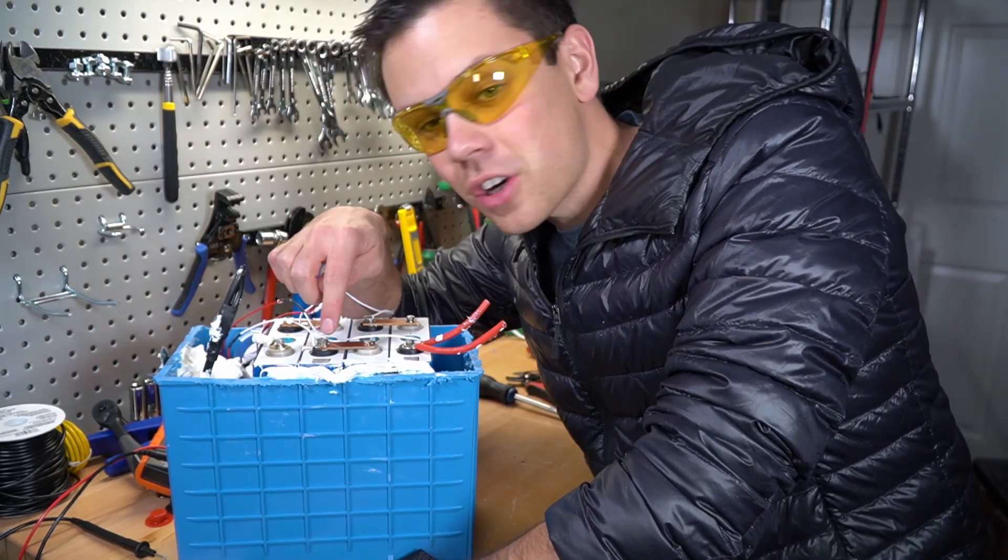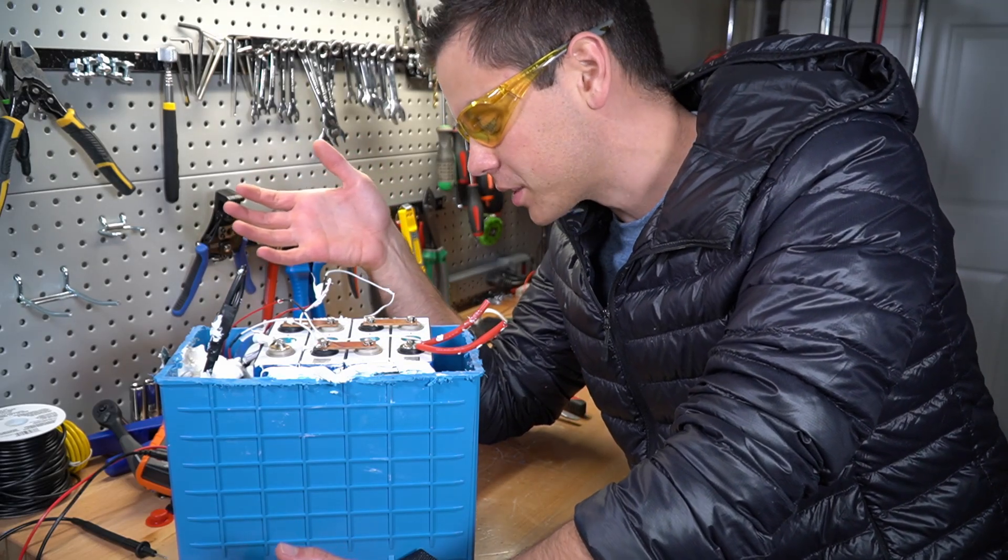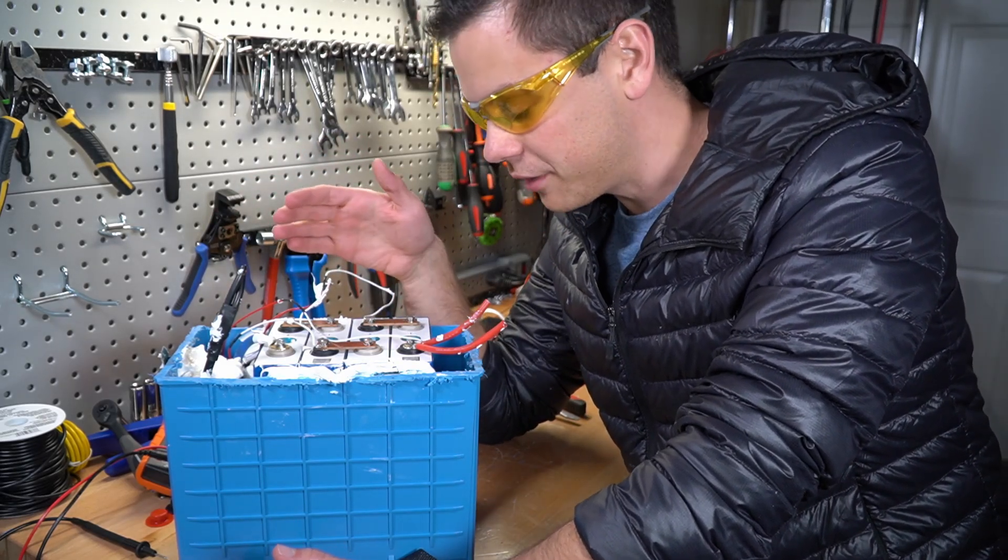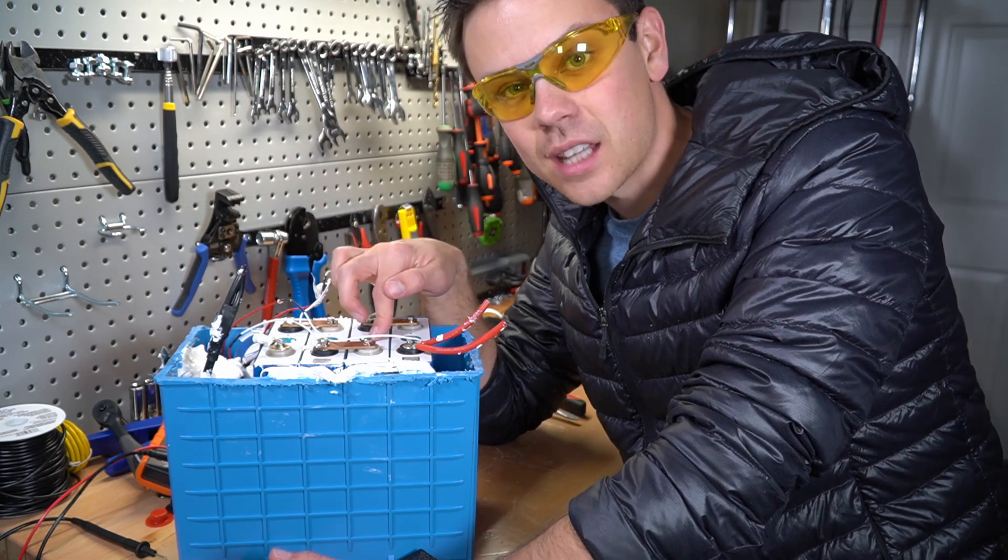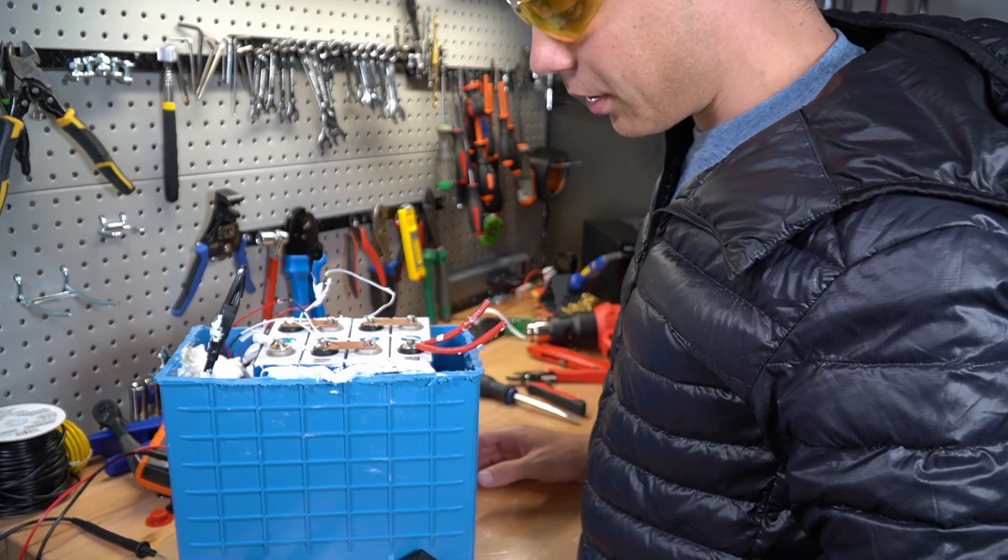But they are using 105 amp hour cells. That's why we got 105 amp hours in our test. And these are good cells. Every single one I've tested has been great. And they're the same ones used in Lion Energy. But everything else around it is pretty bad.